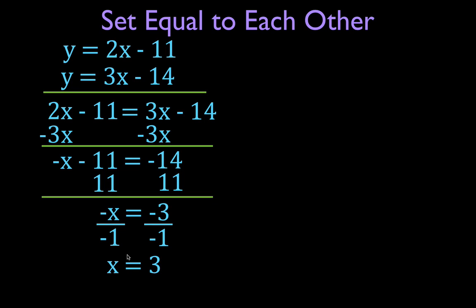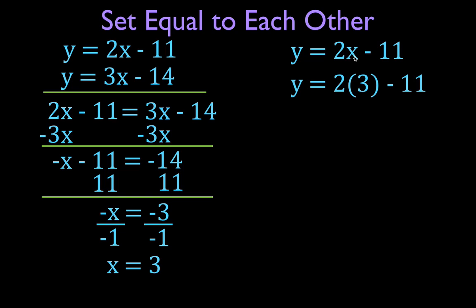Now I have found the x value by setting them equal to each other. I'm going to take this x value and substitute it into either equation to solve for y. It doesn't matter which equation you use — you'll get the same answer. I'll use the top one: y equals 2x minus 11. I substitute 3 in for x.